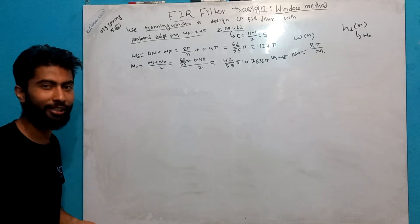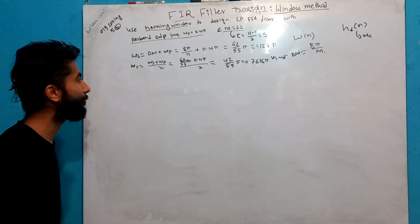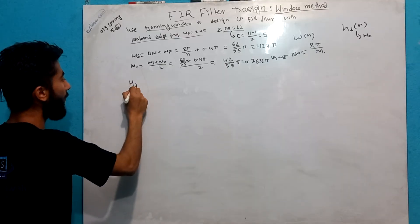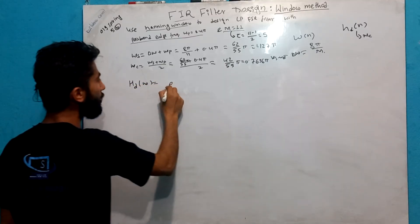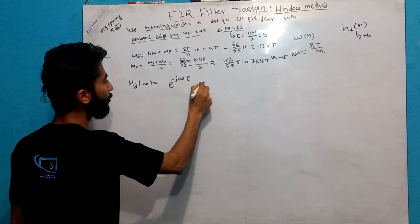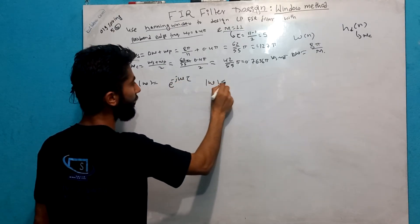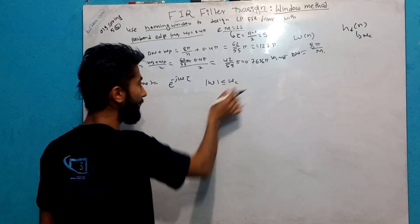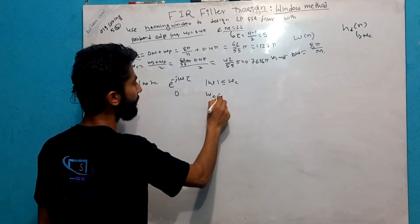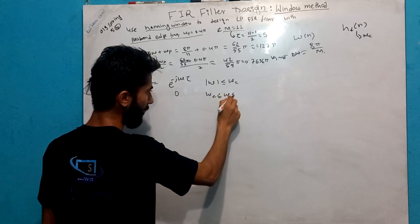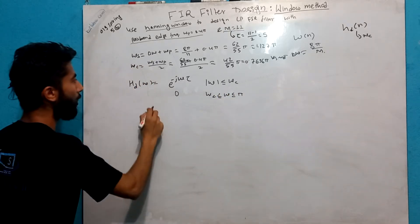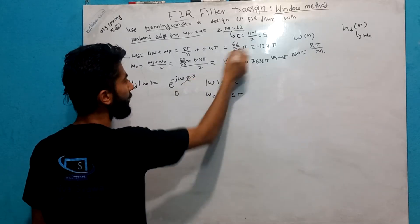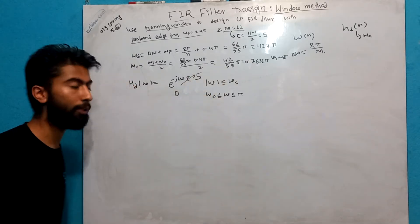So omega c is 0.7636π. Now, we can write the ideal lowpass filter impulse response h(n) as the integral from minus omega c to omega c of e to the power plus j·omega·tau d·omega, performing the inverse DTFT.